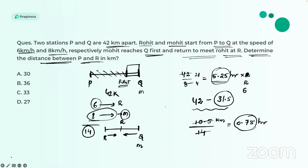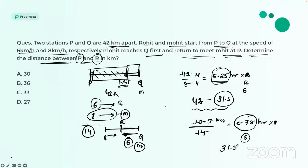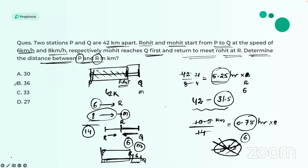In 0.75 hours, Mohit travels from Q back toward P: 8 × 0.75 = 6 kilometers. The question asks for the distance between P and R. Since Mohit traveled 6 km back from Q (42 km), the distance P to R is 42 − 6 = 36 kilometers. So option B is correct.